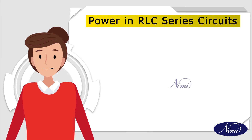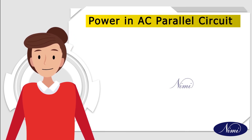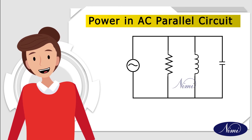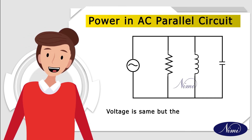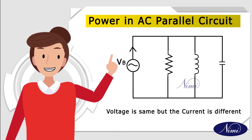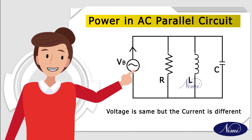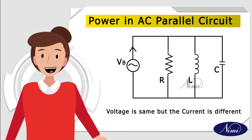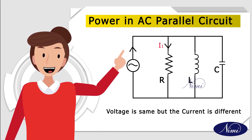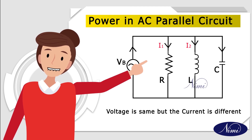Next is the power in an AC parallel circuit. In a parallel circuit, all the elements are connected across the supply. Here, voltage is the same but current is different. Let V be the voltage of the given circuit, where R, L, and C are connected in parallel. The current through the resistor is I1, through the inductor is I2, and through the capacitor is I3.